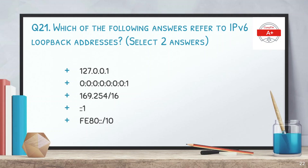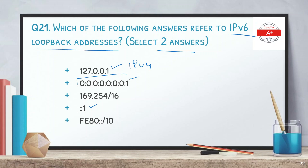Question number 21: which of the following answers refer to IPv6 loopback addresses? We have to select two answers. The options are 127.0.0.1, 0:0:0:0:0:0:0:1, 169.254/16, ::1, and fe80::/10. The answer 127.0.0.1 is the IPv4 loopback so it cannot be the answer. The correct answers are 0:0:0:0:0:0:0:1 and ::1 — these are the same address, since the full form compresses to ::1.